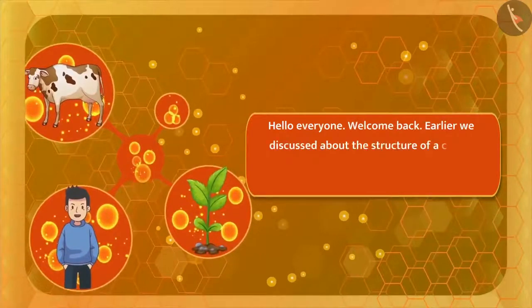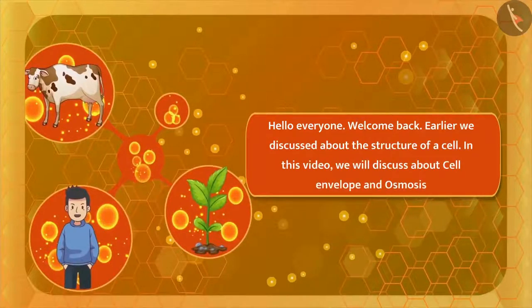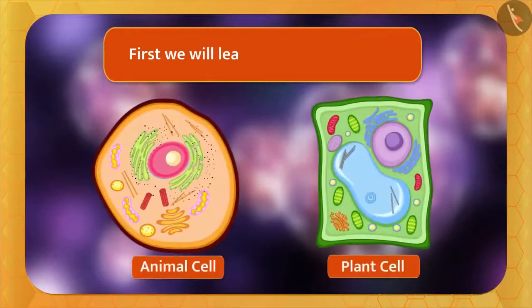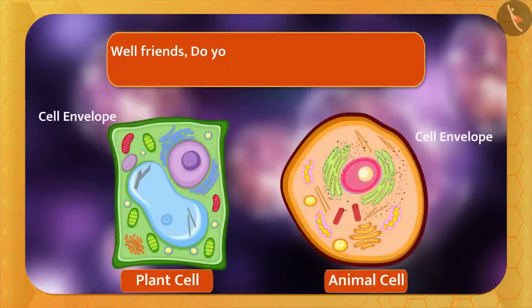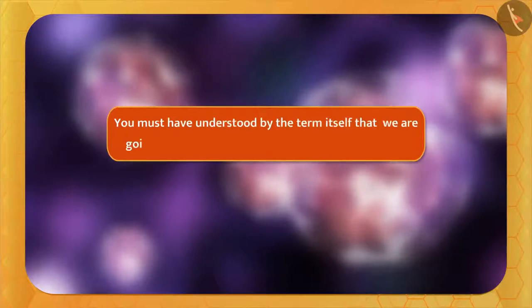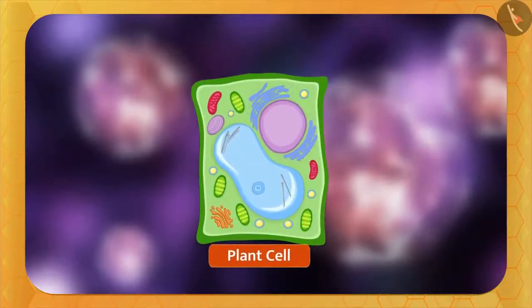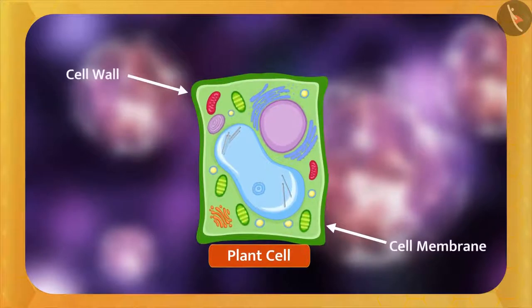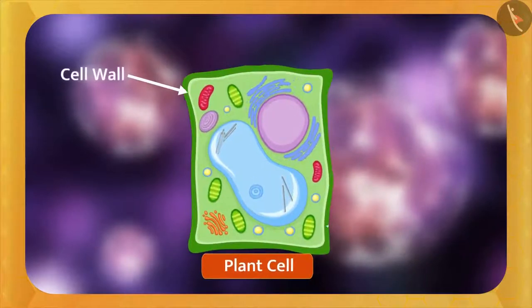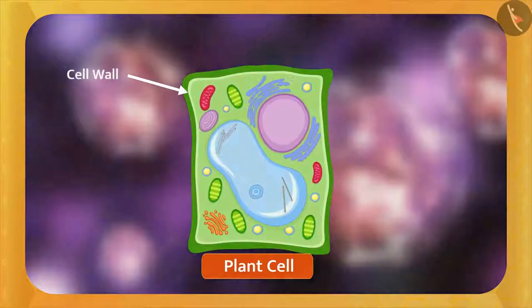Earlier we discussed the structure of the cell. In this video, we will discuss cell envelope and osmosis. First, we will learn about cell envelope. Do you know what a cell envelope is? By the term itself, we are going to understand the outermost layers of the cell. The cell envelope is made up of the cell wall and the cell membrane. Let's understand what a cell wall is.